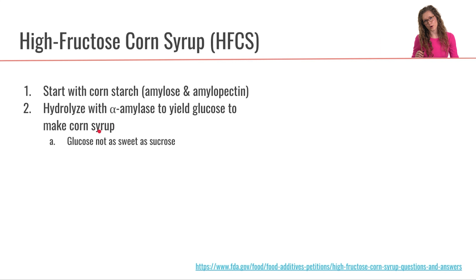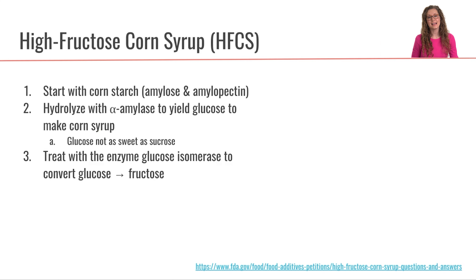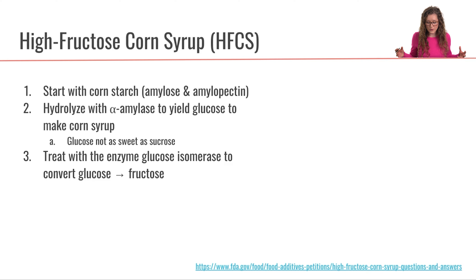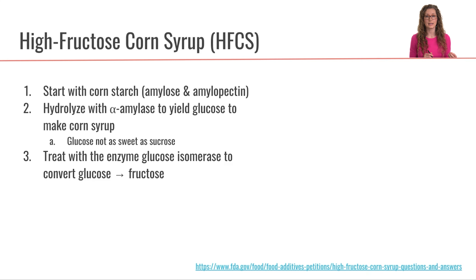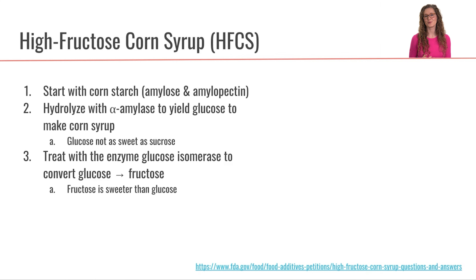Now, glucose is not as sweet as sucrose, so using just a glucose syrup is not going to be sweet enough. Instead, what we do is take this corn syrup — which is just glucose — and treat it with the enzyme glucose isomerase to convert glucose into fructose.